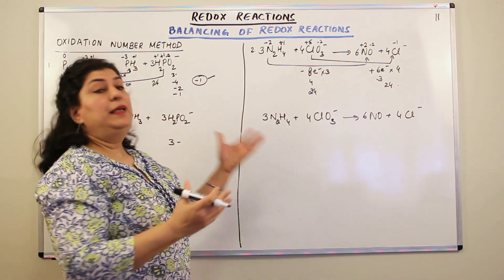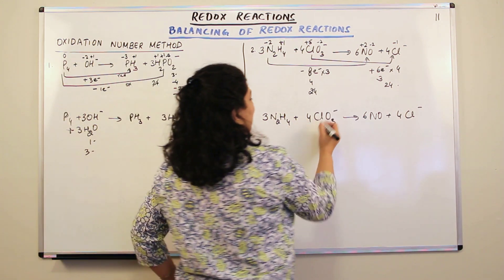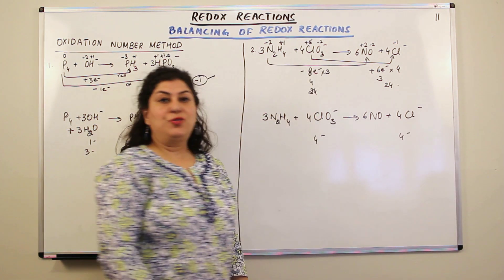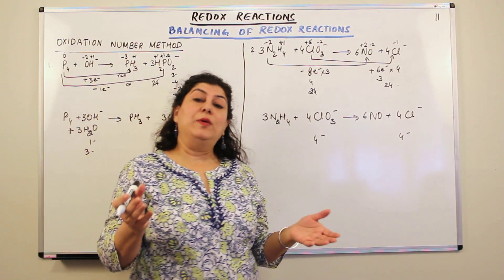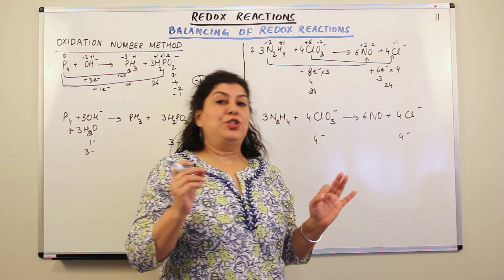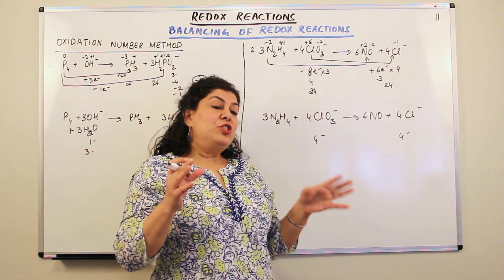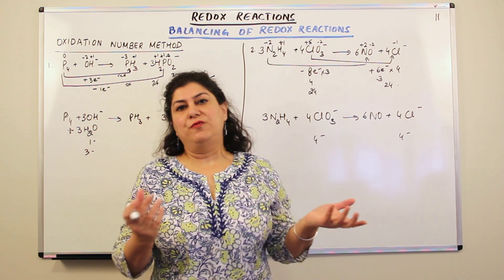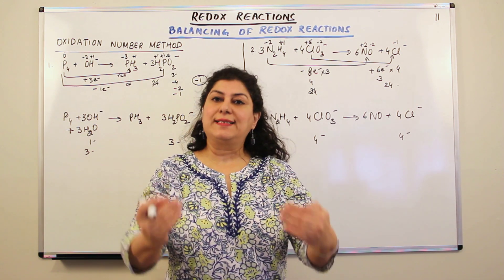Now let us find the charges on both sides. On the reactant side, 4ClO3 negative gives four negative charges. On the product side, 4Cl negative gives four negative charges. The negative charges on both sides are already equal. Since the charges were unequal I would have balanced them using OH negative because this reaction is in basic medium, but since they are already equal there is no need to add OH negative. This step is taken care of.